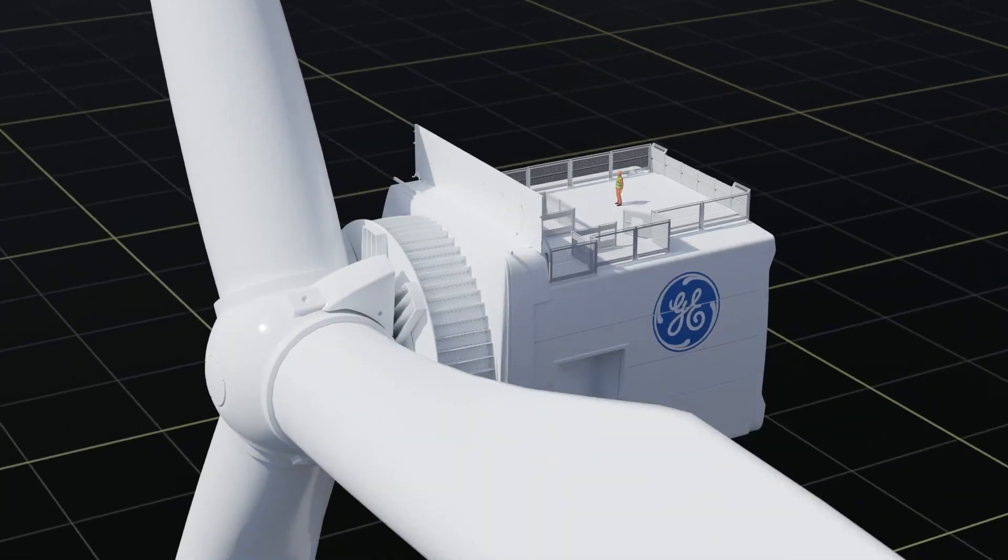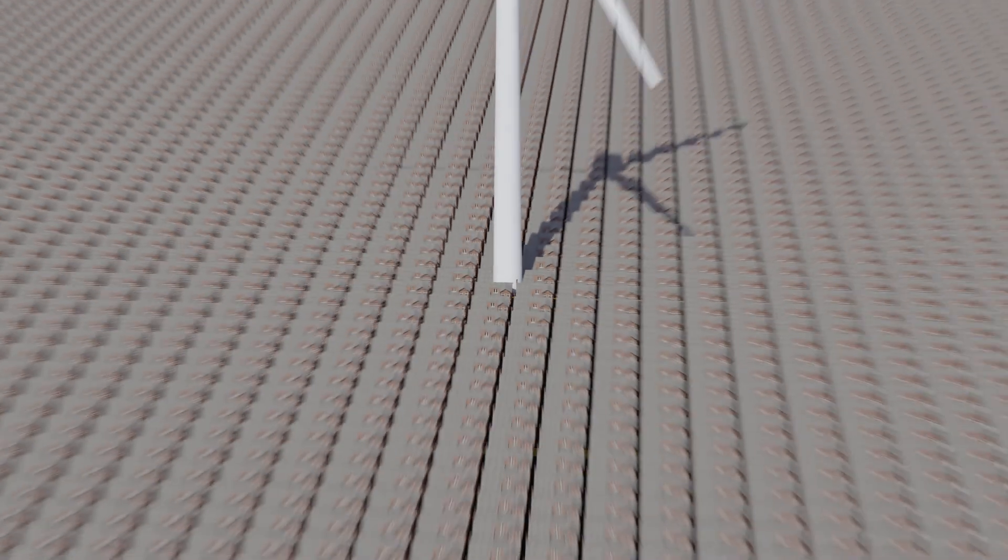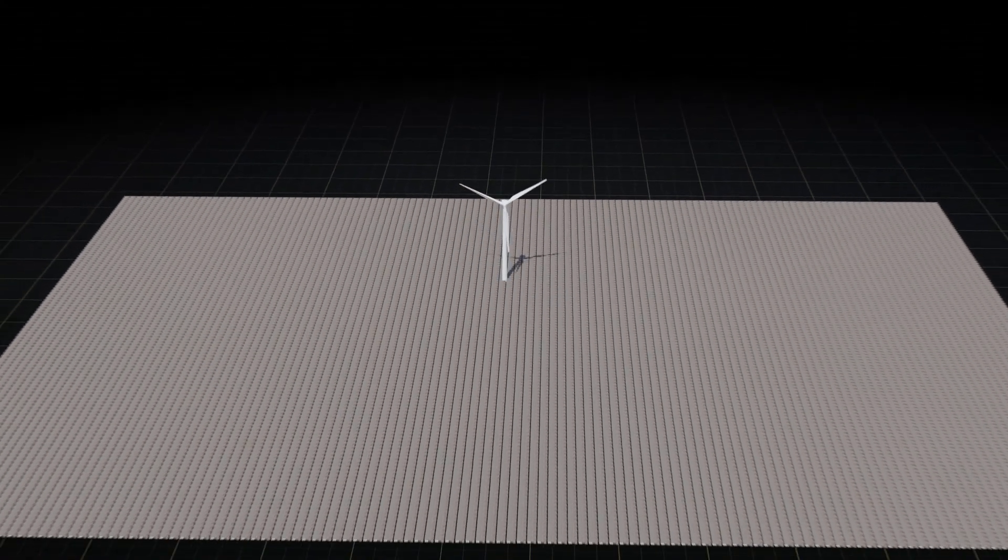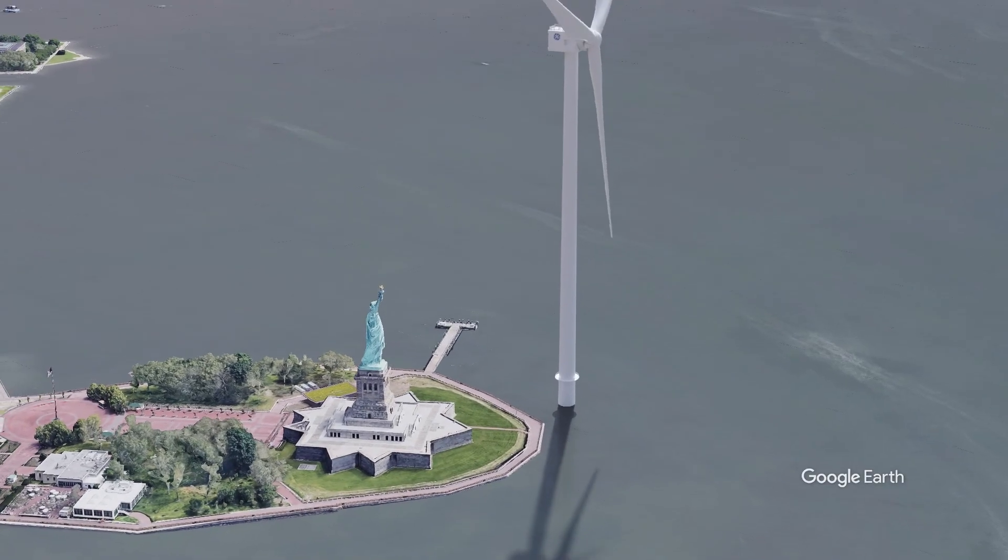One of these giants is produced by GE, model Haliade-X. One such giant turbine could power 16,000 average homes for a year. It really is a gigantic machine with an impressive size.